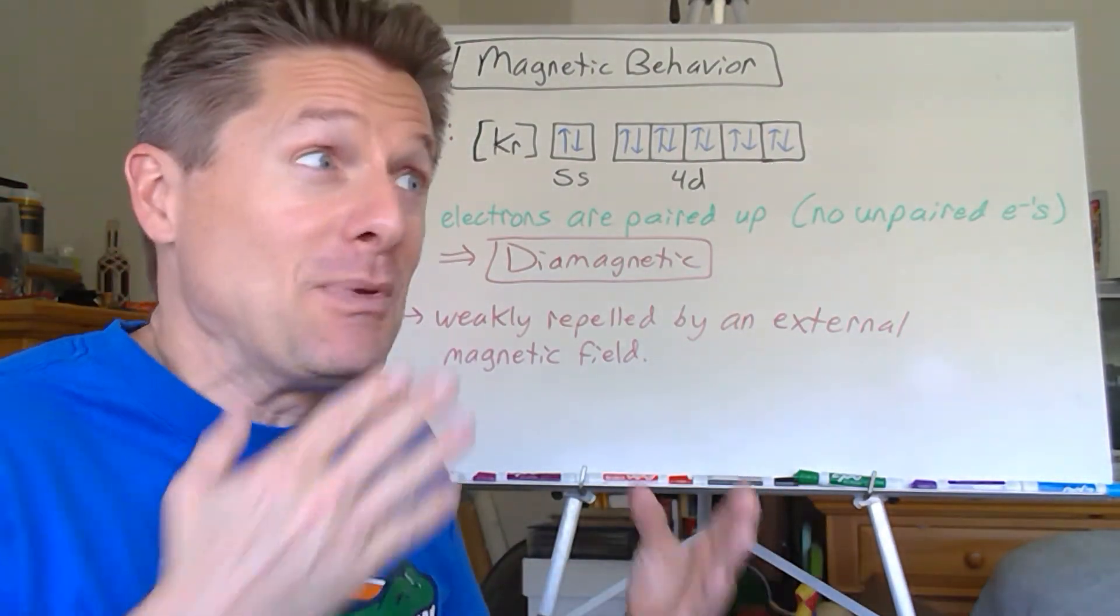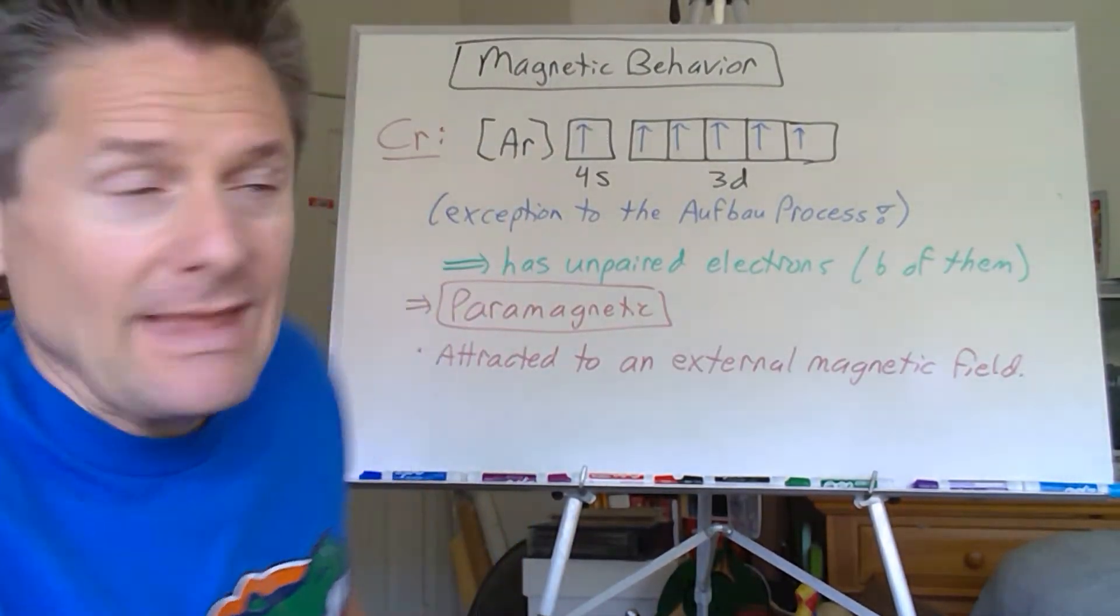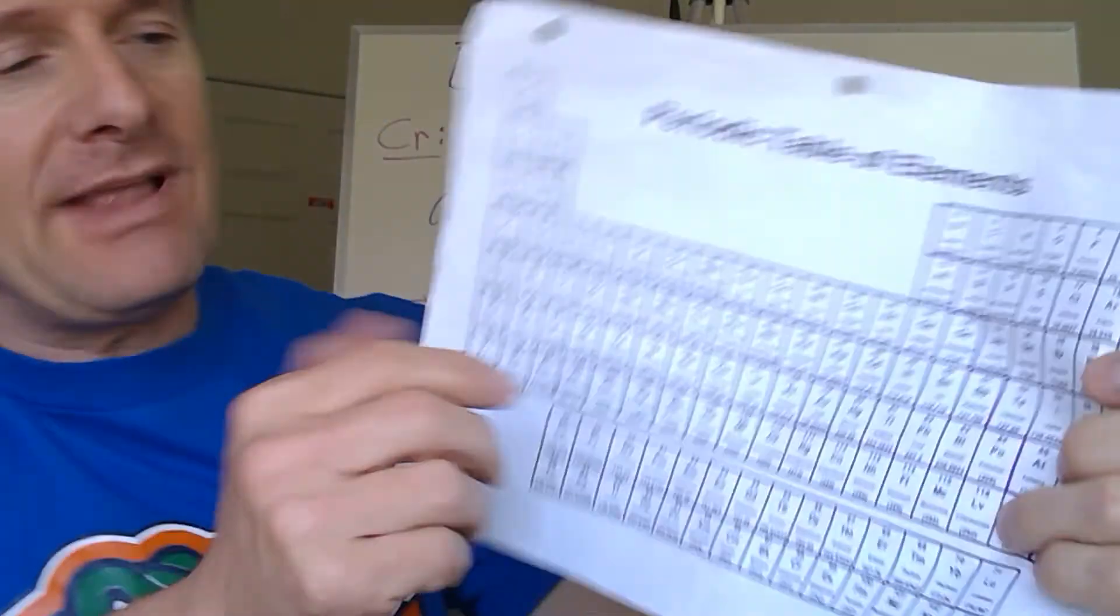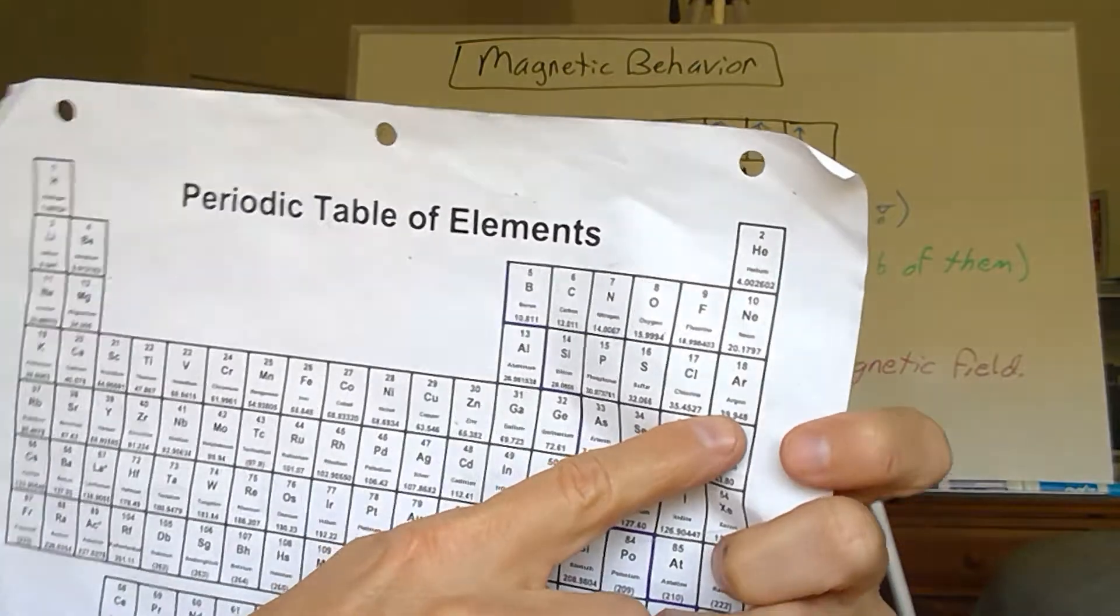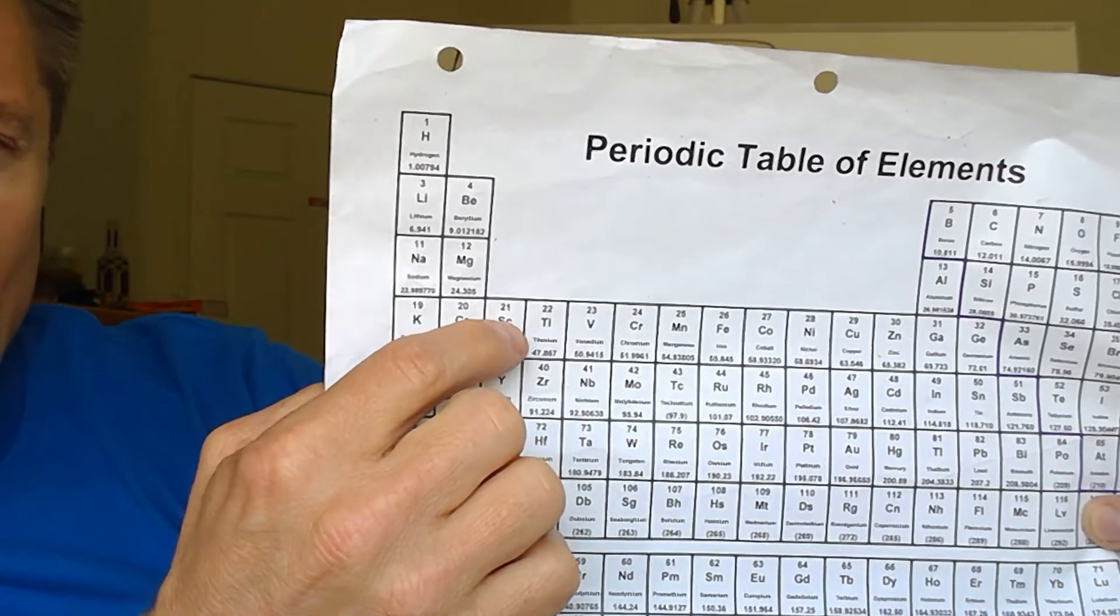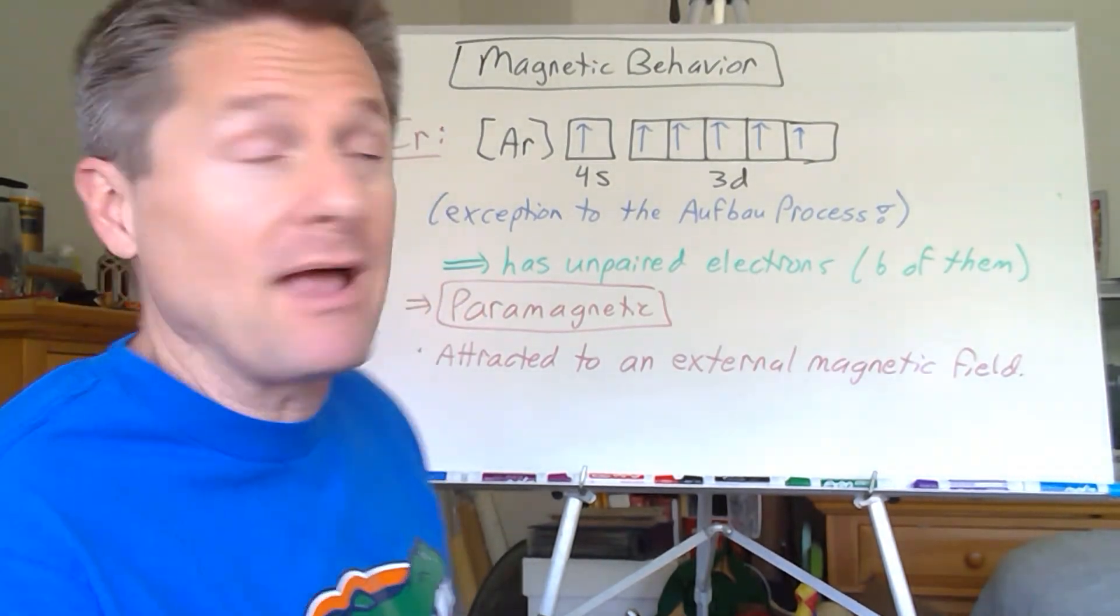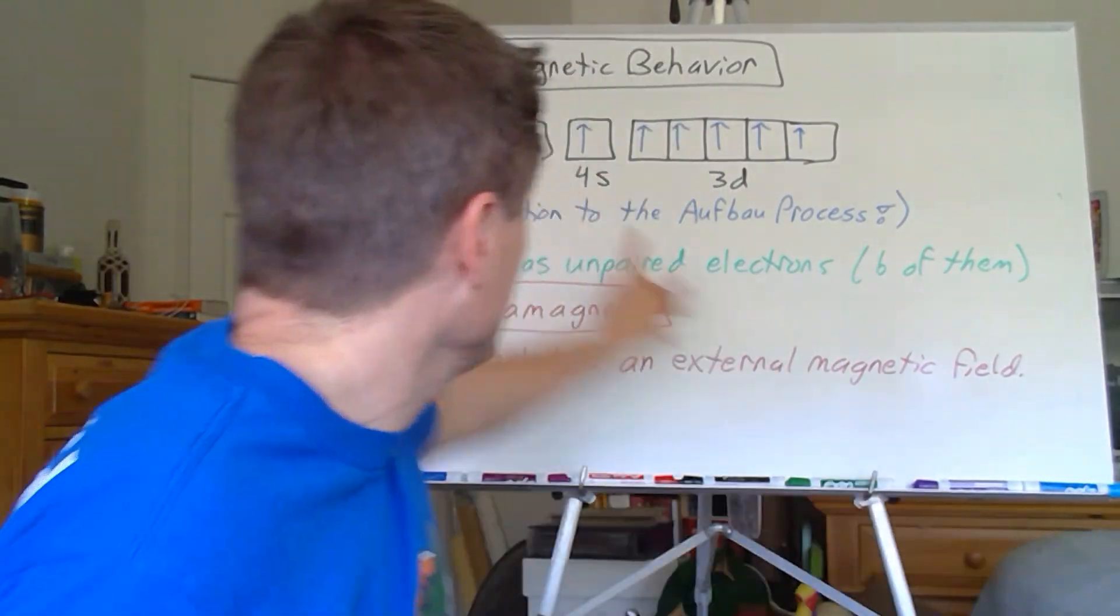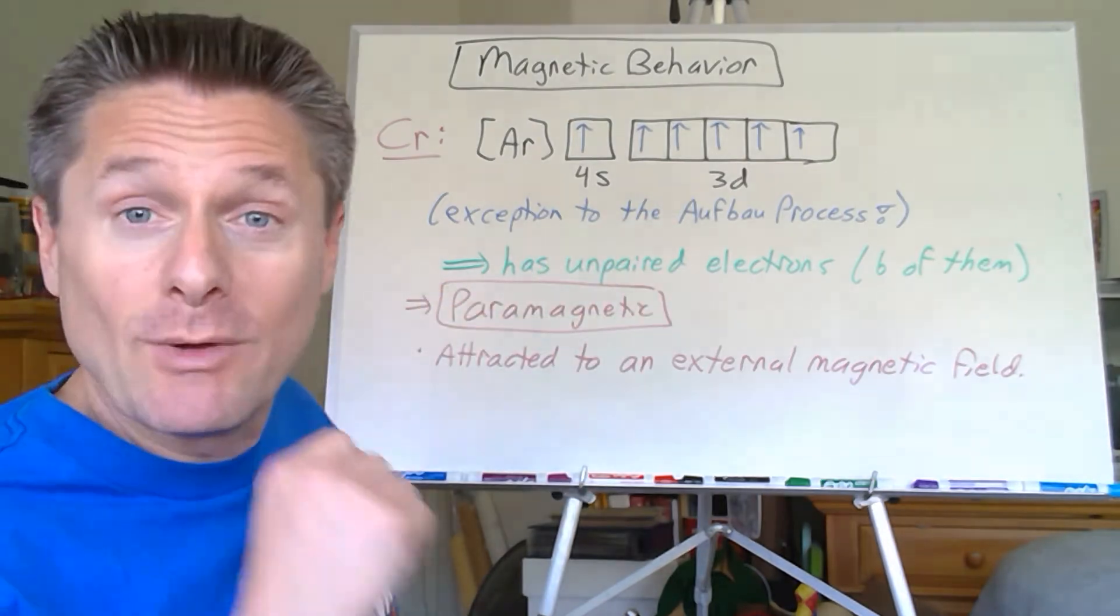Let's take a look at chromium. Chromium is one of those ones that's almost half filled in its D-shell, number 24. The prior noble gas is argon, and then you've got 4S2, 3D4. You would think it would be 4S2, 3D4 if you followed the Aufbau process. But remember those ones that are almost half filled? Half filled and filled are preferable. So it promotes one from the 4S to the 3D. So this is one of those exceptions.